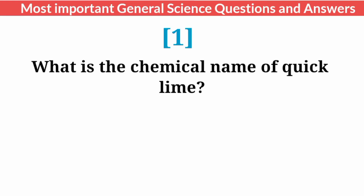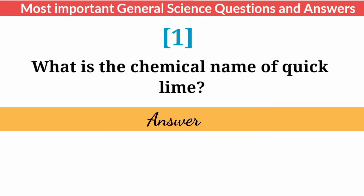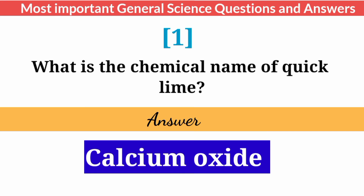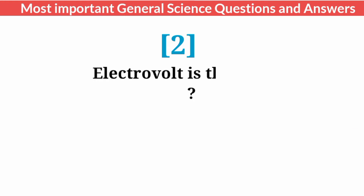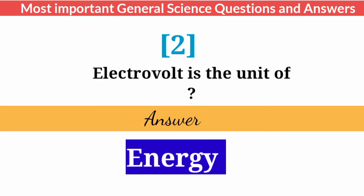What is the chemical name of quicklime? Answer: Calcium Oxide. Electrovolt is the unit of? Answer: Energy.